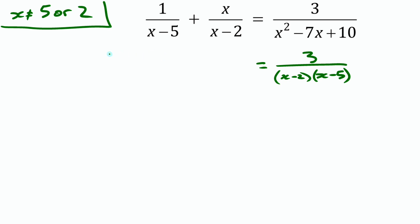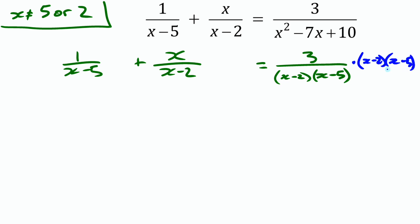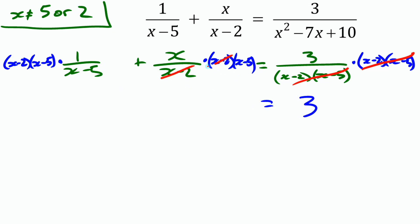We have 1 over x minus 5 plus x over x minus 2 equals 3 over x minus 2 times x minus 5. We multiply every term by x minus 2 and x minus 5. On the right side, both factors cancel leaving just 3. For the second term, x minus 2 cancels leaving x times x minus 5. For the first term, x minus 5 cancels leaving x minus 2.